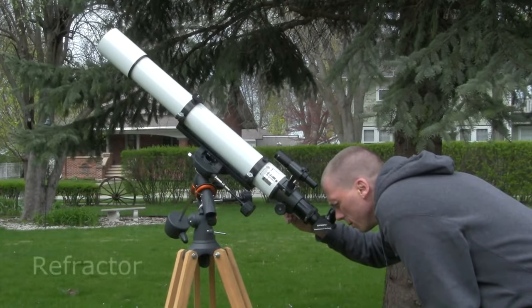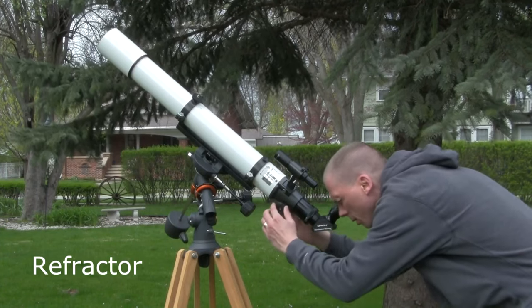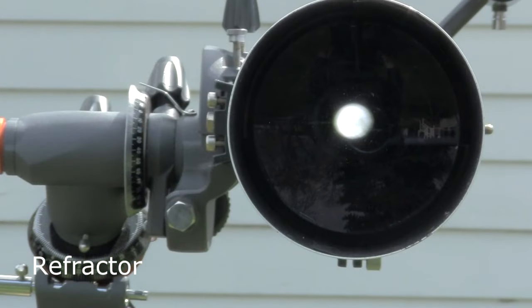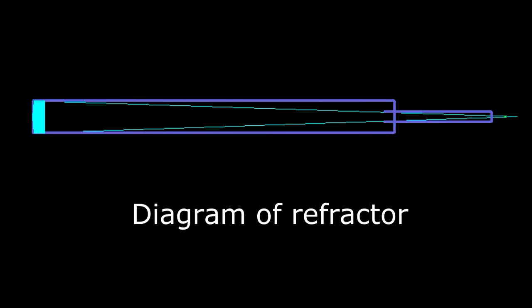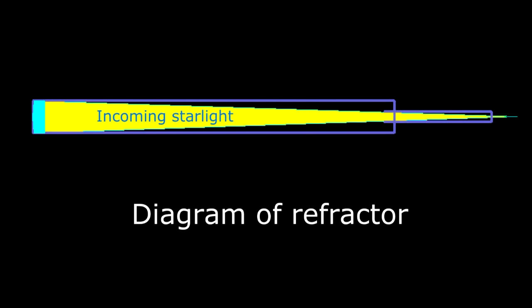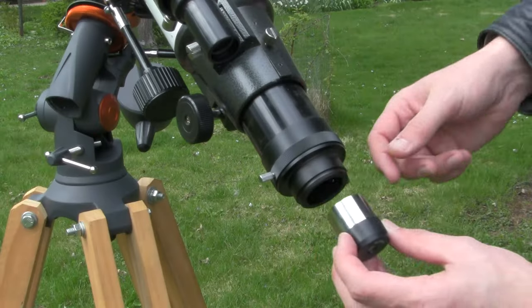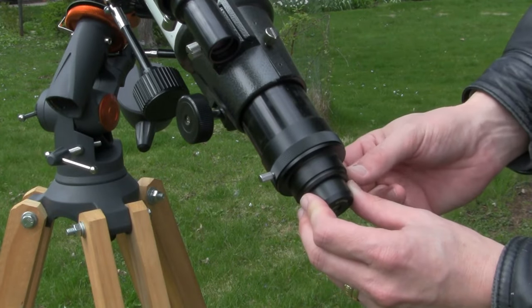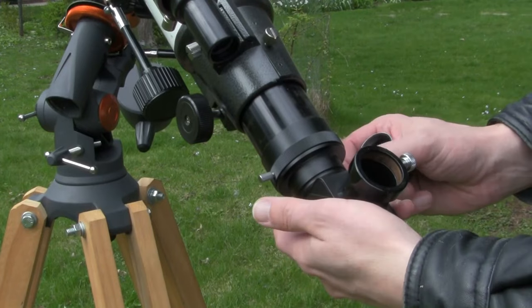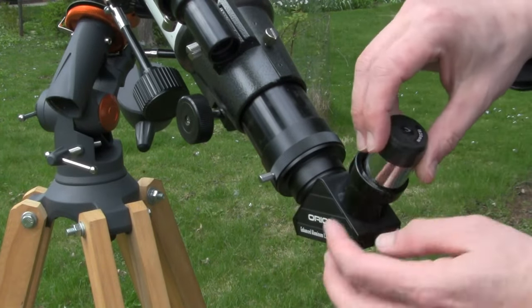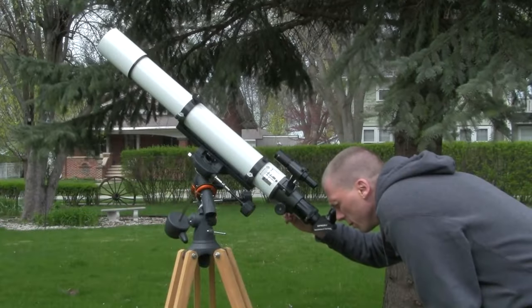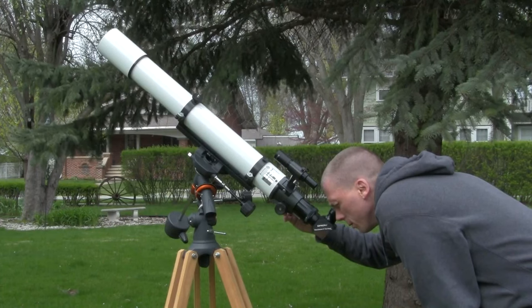When most people think telescope, they probably imagine a refractor, like this one. They have a large glass lens at one end, through which light passes and refracts, or bends, the light to a focal point. As the light passes the focal point here, we place an eyepiece, which then focuses the light into a magnified image we can see, though usually a star diagonal is placed here to bounce the light 90 degrees for more comfortable viewing. So far, so good, right?